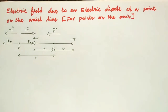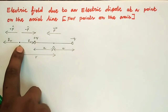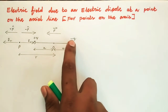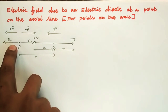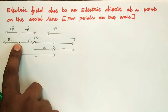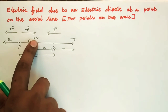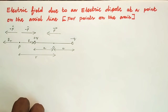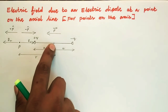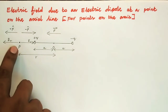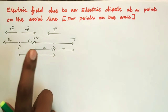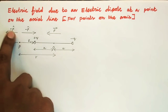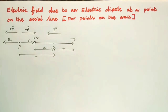Electric field due to an electric dipole at a point on the axial line. Here we have a positive charge and a negative charge. The electric field direction is radially outwards for positive charge and radially inwards for negative charge. The distance between the origin and the charge is taken as A, and the distance from this point to the origin is R, which represents a vector indicating the direction of the electric field.